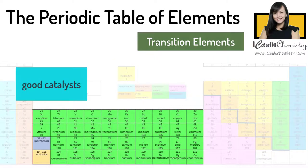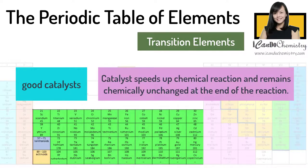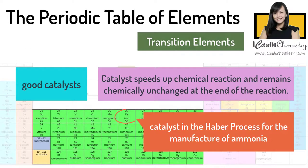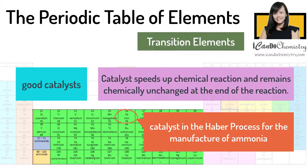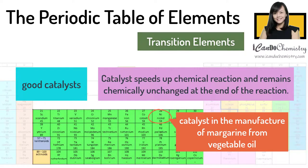Transition elements and their compounds are good catalysts. A catalyst is a substance that speeds up a chemical reaction but remains chemically unchanged at the end of the reaction. Iron is a catalyst in the Haber process for the manufacture of ammonia. Nickel is used in the manufacture of margarine from vegetable oils.